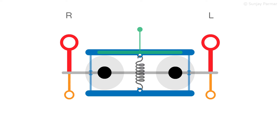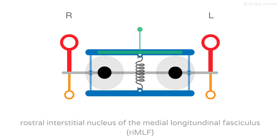The most important of these is the rostral interstitial nucleus of the medial longitudinal fasciculus, the interstitial nucleus of Cajal, and the posterior commissure. The rostral interstitial nucleus of the medial longitudinal fasciculus, or RIMLF for short, is the main structure controlling vertical and torsional saccadic movement. Its action is analogous to the paramedian pontine reticular formation that controls horizontal saccadic movement. We have a RIMLF on either side of the midbrain, which sends fibres that innervate the nuclei of the various vertical-acting extraocular muscles. Each RIMLF contains upgaze and downgaze saccadic fibres.